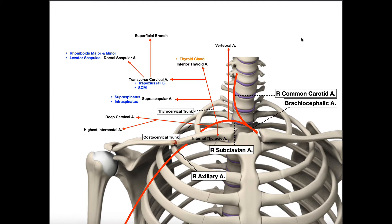Let's begin by talking about the heart. The heart has an aorta coming off of the left ventricle, and off of the aorta we'd have the arch of the aorta, or the aortic arch. The aortic arch has three branches. The first one is the brachiocephalic artery.